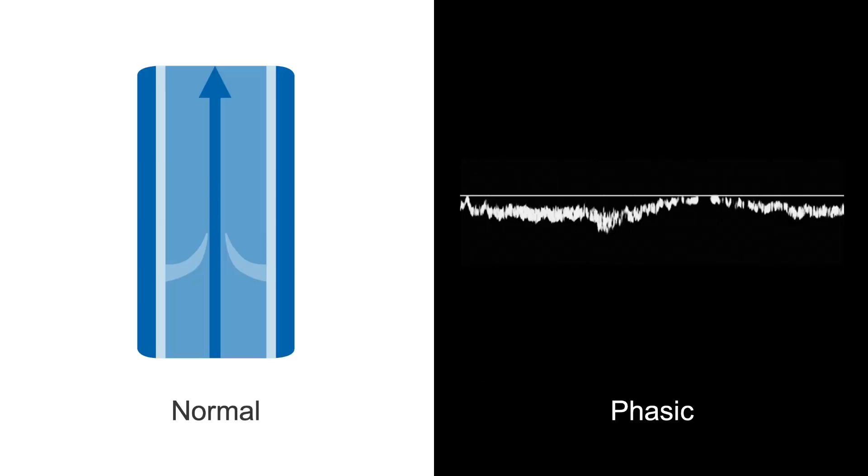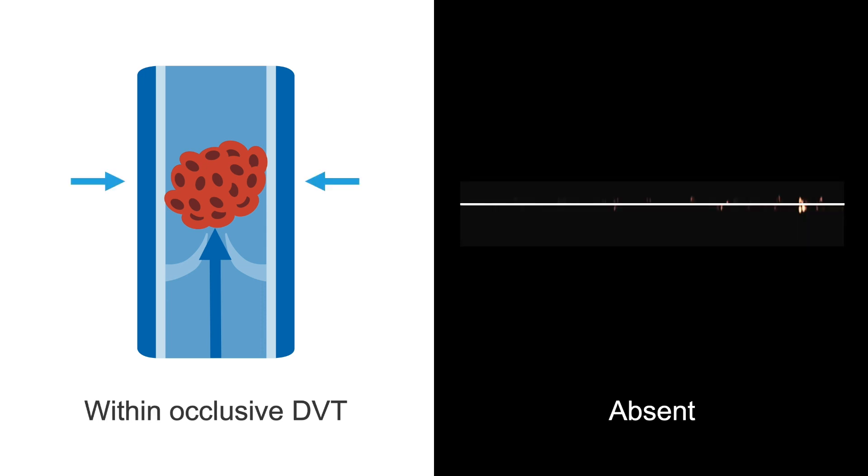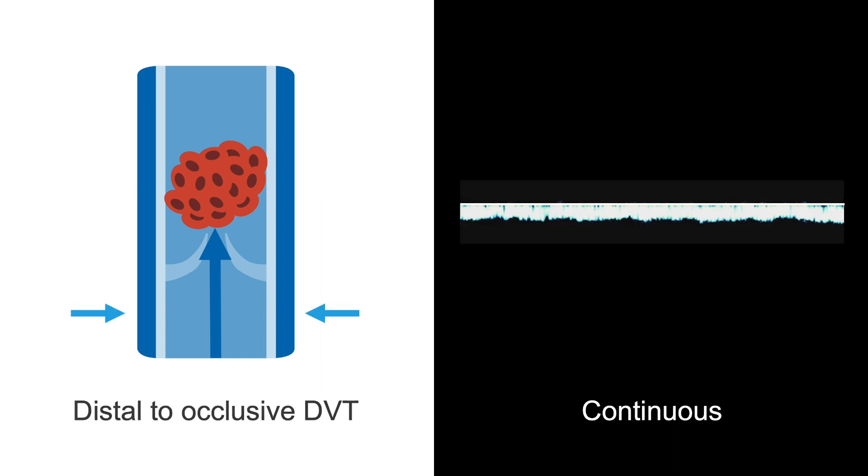In summary, normal venous waveforms are phasic, approaching and slowly dipping below the baseline with respiration. Proximal to an occlusive DVT, waveforms are sometimes pulsatile. Within an occlusive DVT, there will be no waveform obtained because there is no blood flow. And finally, distal to an occlusive DVT, waveforms will be continuous and not change with respiration.